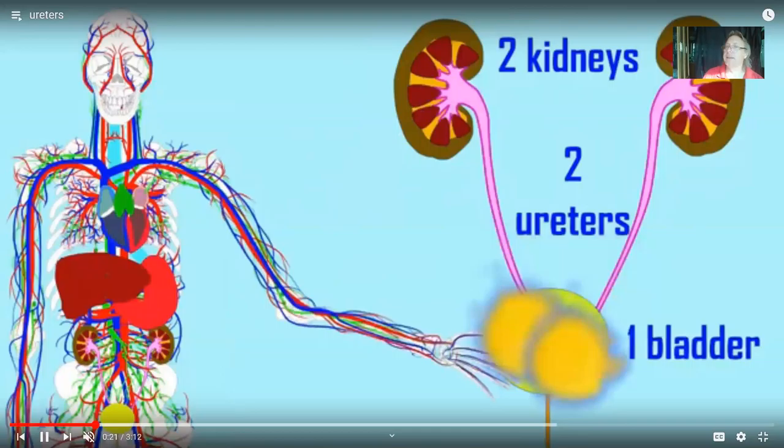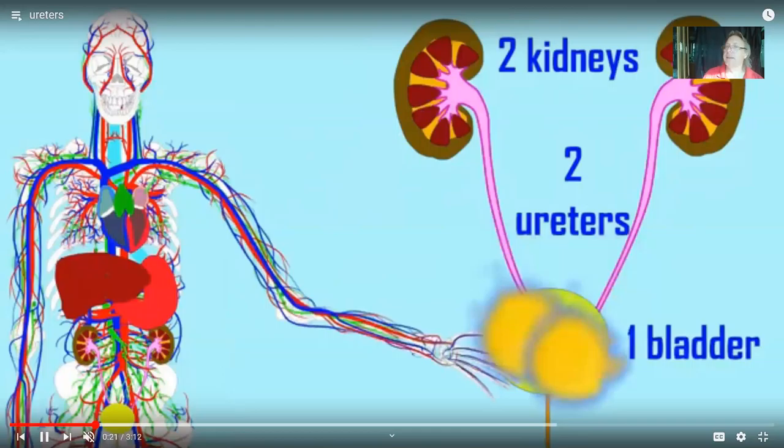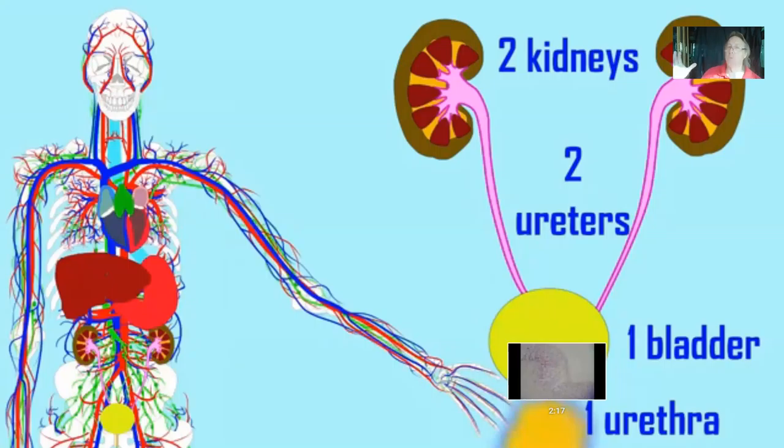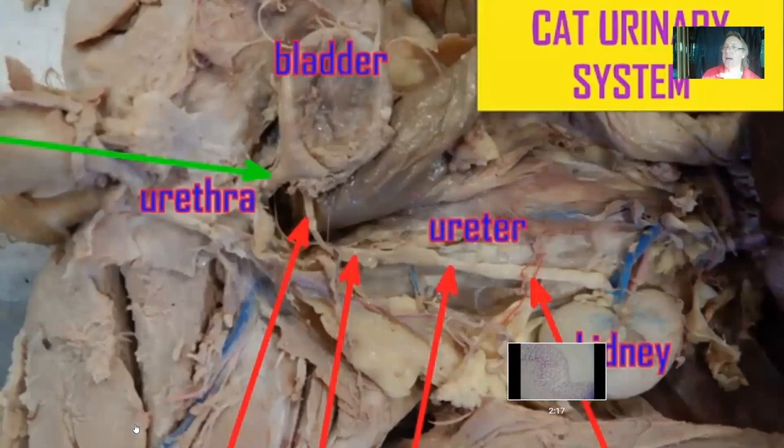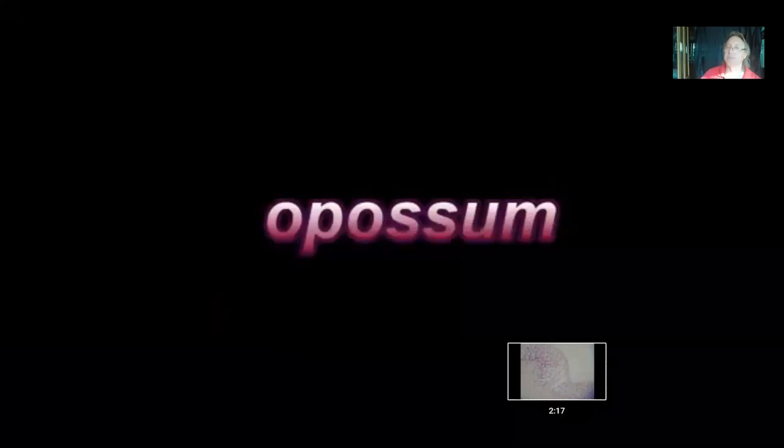The ureters have the benefit of using gravity when we're sitting upright, but they also have smooth muscle in their linings. A wave of muscle contraction known as peristalsis can then help to move the urine toward the bladder. The cells lining the ureters can secrete an alkaline mucus, which helps to buffer the urine.